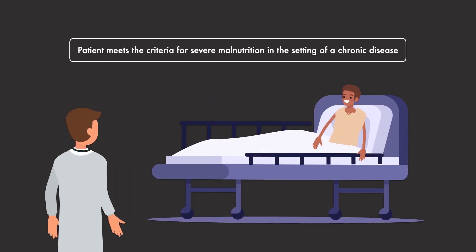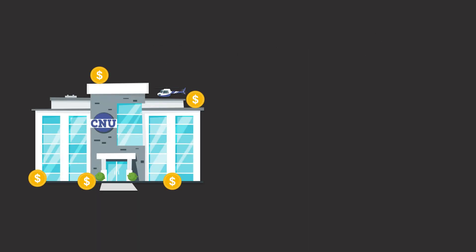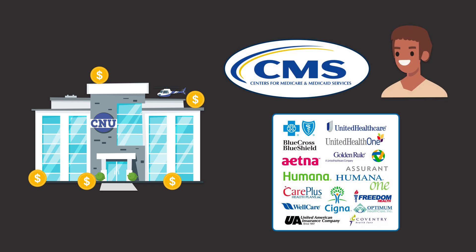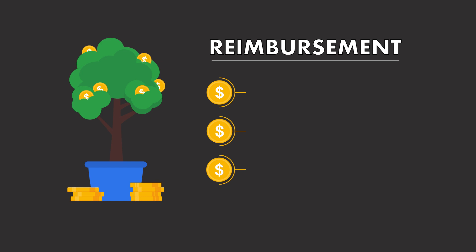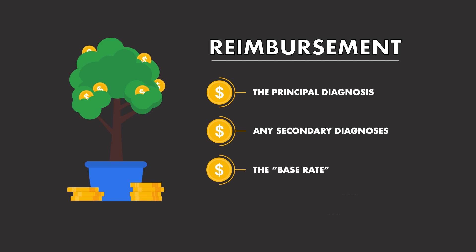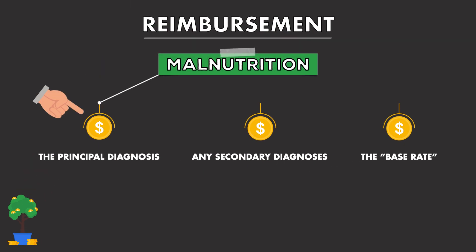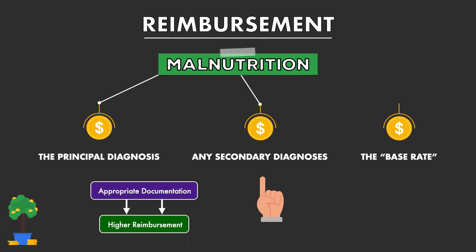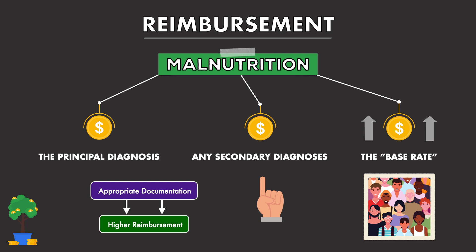Providing a formal diagnosis of malnutrition and documenting it in the electronic medical record is necessary because it helps to address this cost. Hospitals receive reimbursement for the care they provide, which is paid for by Medicare, Medicaid, a private insurance company, or by the patient themselves. The amount paid is based on a number of factors such as the principal diagnosis, any secondary diagnoses, and the base rate of the hospital, which is determined by things like the demographics of the patient population and the severity of illness at the facility. While malnutrition is not a common principal diagnosis, in many cases it can be added as a secondary diagnosis. When there's appropriate documentation of it, it will lead to a higher reimbursement for the single admission.